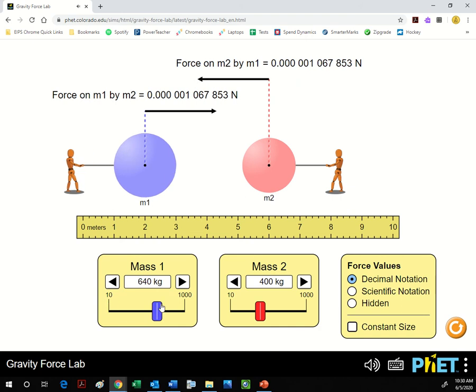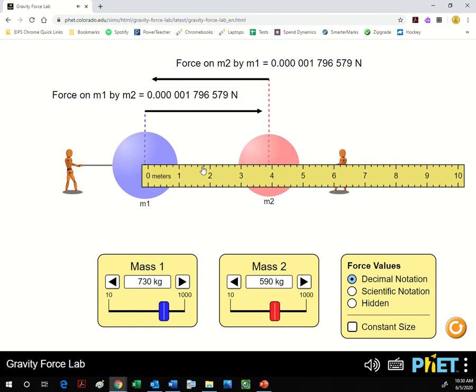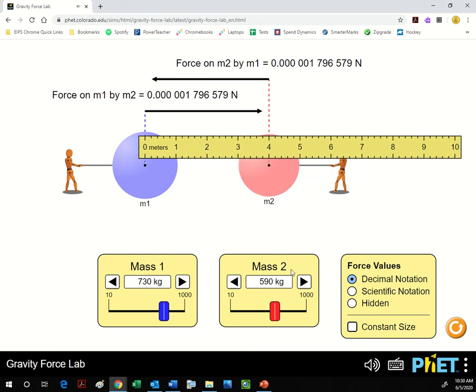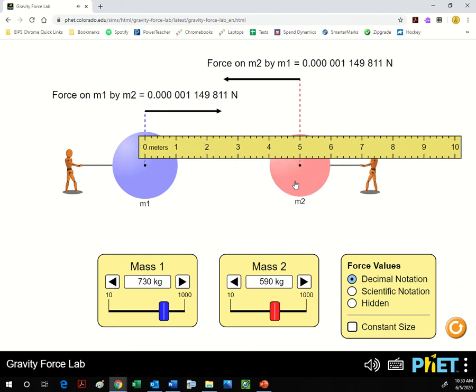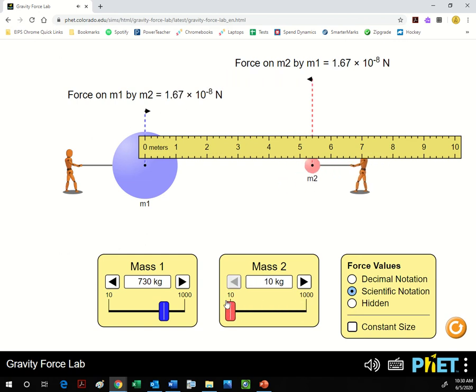So what you can do is you can manipulate mass 1, you can manipulate mass 2, you can move this ruler here and measure the distance between them. Remember that you always want to measure from the center of mass and you can see how that affects it. Really easy straightforward lab to use. Look at that, you can put in scientific notation. That's new. That's actually kind of convenient.